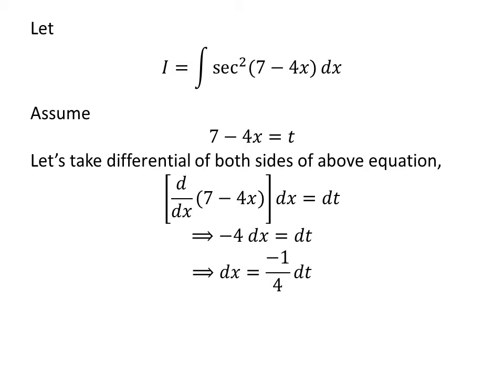Shifting minus 4 to right gives us differential of x is equal to minus 1 upon 4 times differential of t.